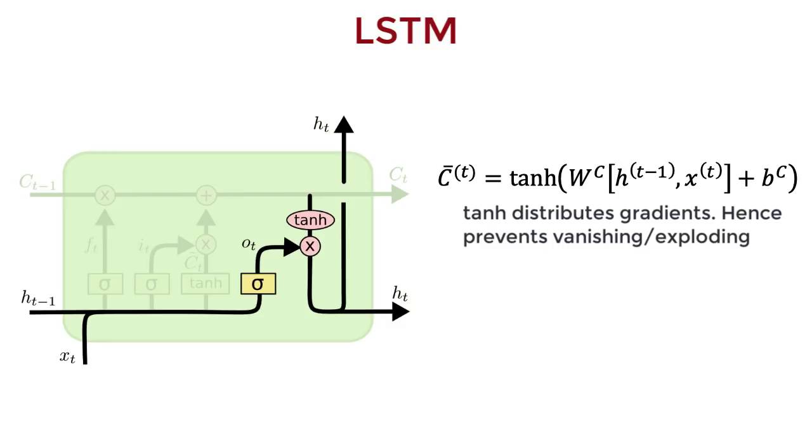Now you have an intuition of why LSTMs are constructed in this way, and how it helps to mitigate the problem of vanishing and exploding gradients. The equation shouldn't be too difficult to understand now.